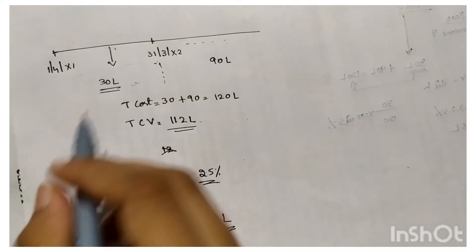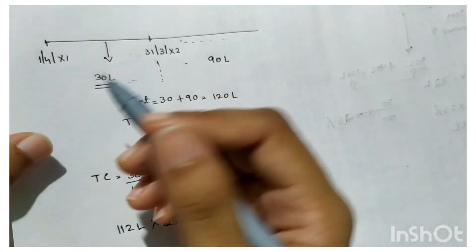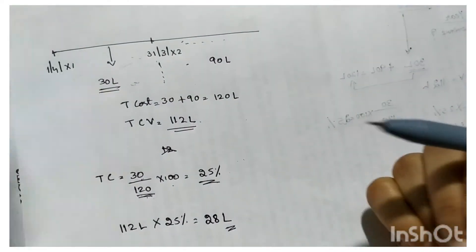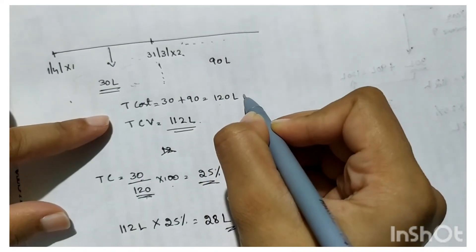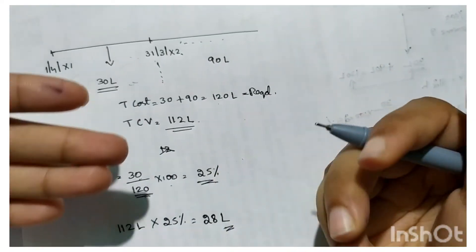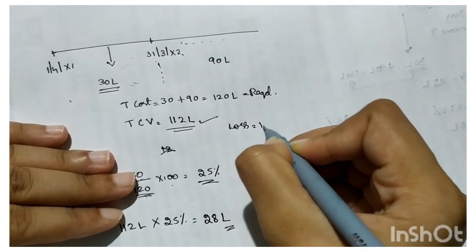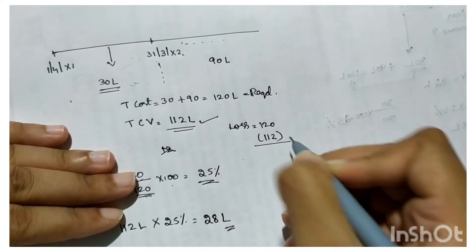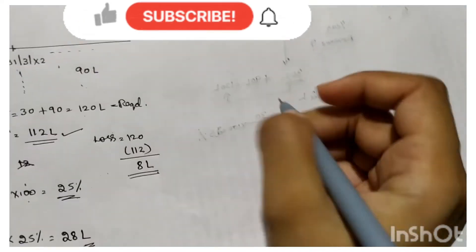Question two: what is the total expense to be recognized in year one? The total cost required to complete the project is 120 lakh, but the amount GH has agreed to pay is only 112 lakh — so the loss is 120 minus 112, which is 8 lakh. To analyze this, let's create a simple P&L account.